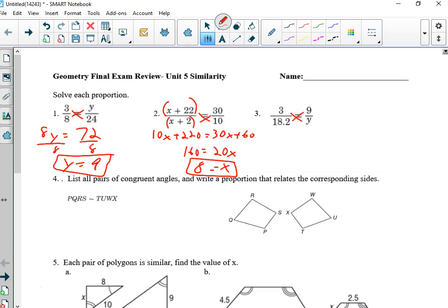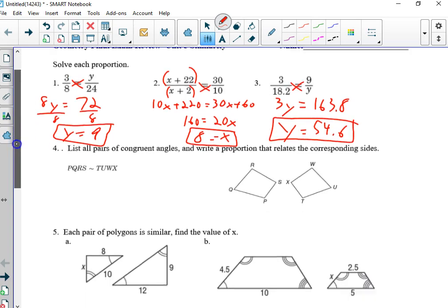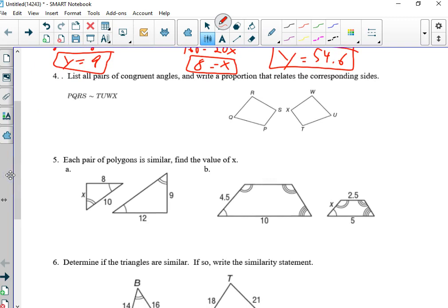Don't let the decimal scare you. We have 3y equal to 18.2 times, using the calculator. I'm doing it right now. 163.8. Then we divide both sides by 3. You end up with 54.6. So we're going through the problems, hit pause, and try to make the video as short as possible.